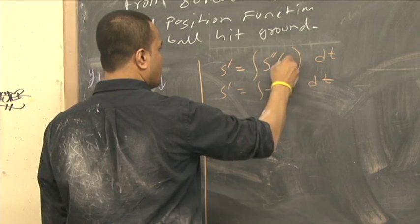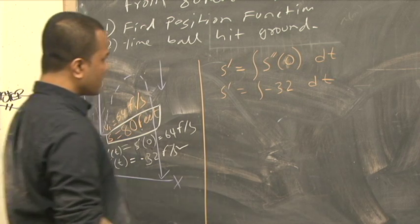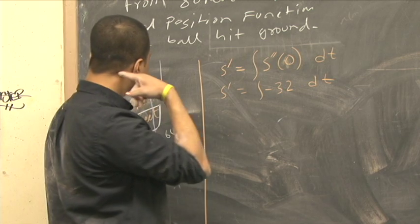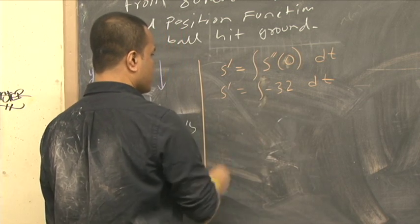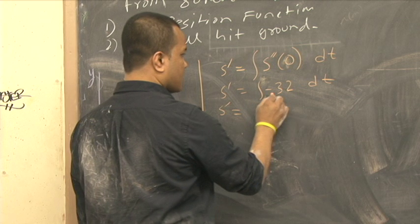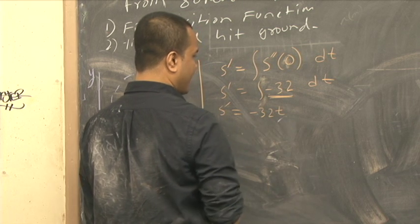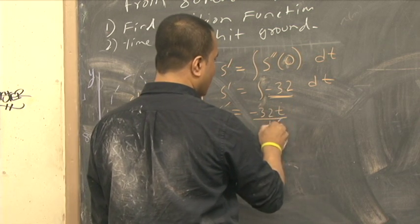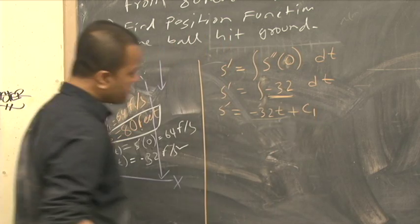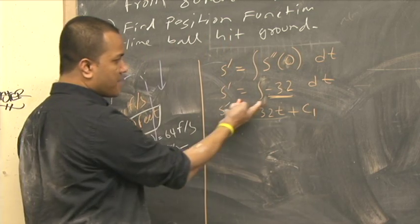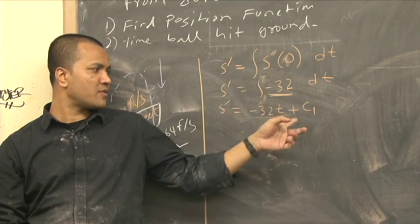This one is 0 at time 0, that was the velocity. So S prime is the integral of negative 32 dt, which equals negative 32t plus c1. Why c1? Because there is no limit, there is no lower bound, there is no upper bound.